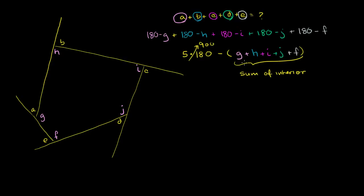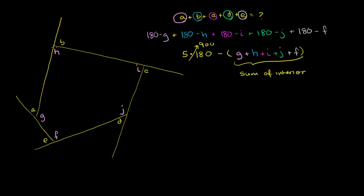It seems like we've made progress, at least if we can figure out the sum of the interior angles. To do that, I'll show you a little trick. What you want to do is divide this polygon — the inside of the polygon — into three non-overlapping triangles. We can do that from any vertex. So there, I've divided it into three non-overlapping triangles. The reason why this is valuable is we know what the sum of the angles of a triangle add up to — 180 degrees.